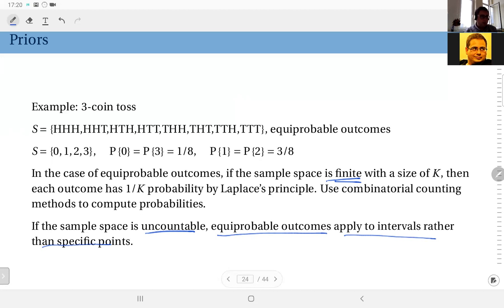This means you have a sample space that cannot be listed. It's uncountable. That means you have something like the sample space is a continuum, like the interval between 0 and 5. So it's not like just 0, 1, 2, 3, 4, 5.